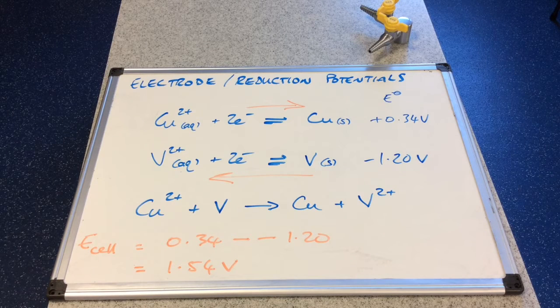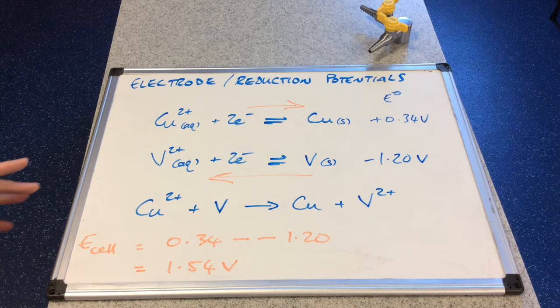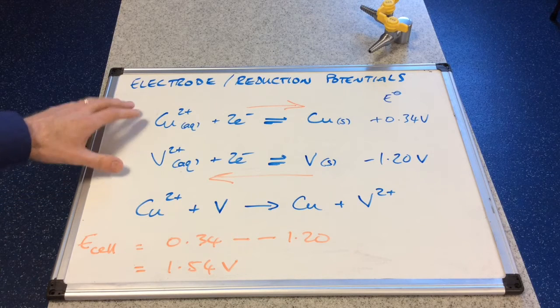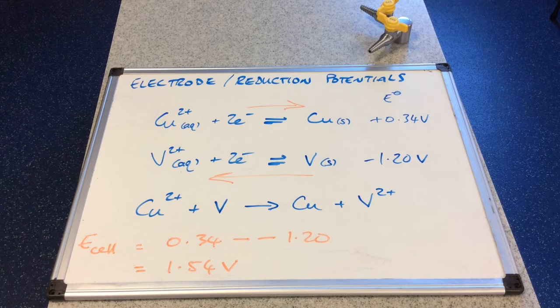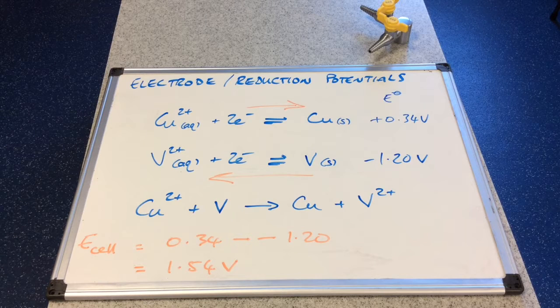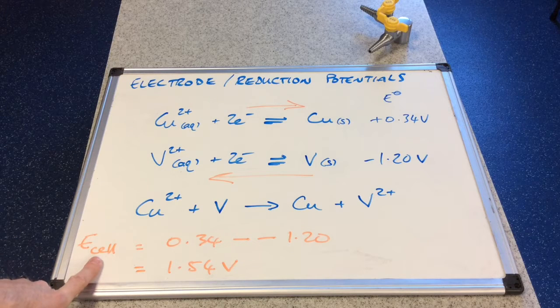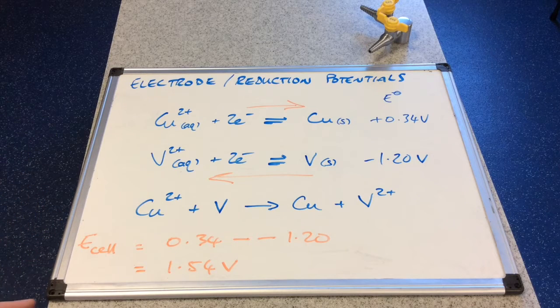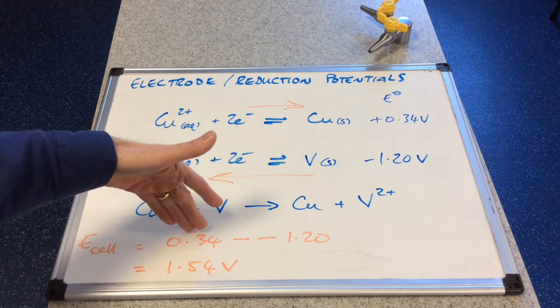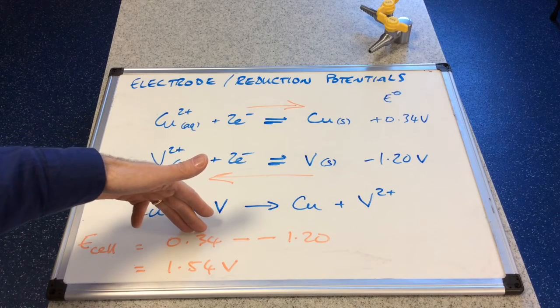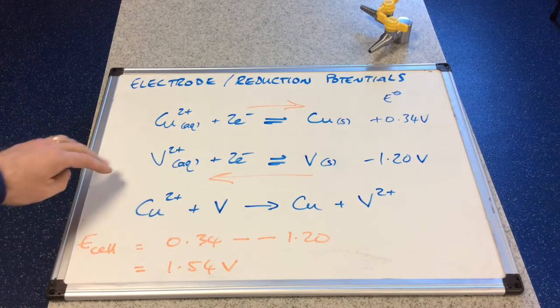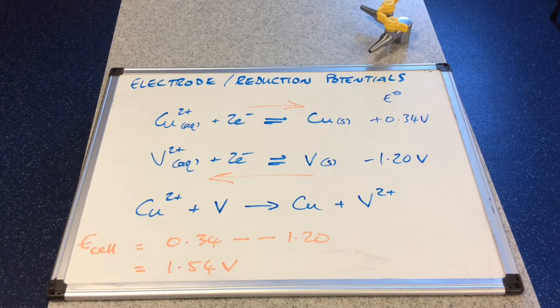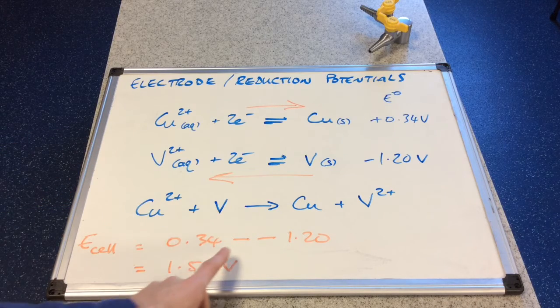And the other thing we can do is we can actually calculate the voltage that would be created by combining these two half cells together. And that we call it the E cell, the voltage of the cell. And the way we do that is we always take the more positive electrode potential and subtract from that the least positive one. So in this case we've got a negative standard electrode potential for the least positive one.